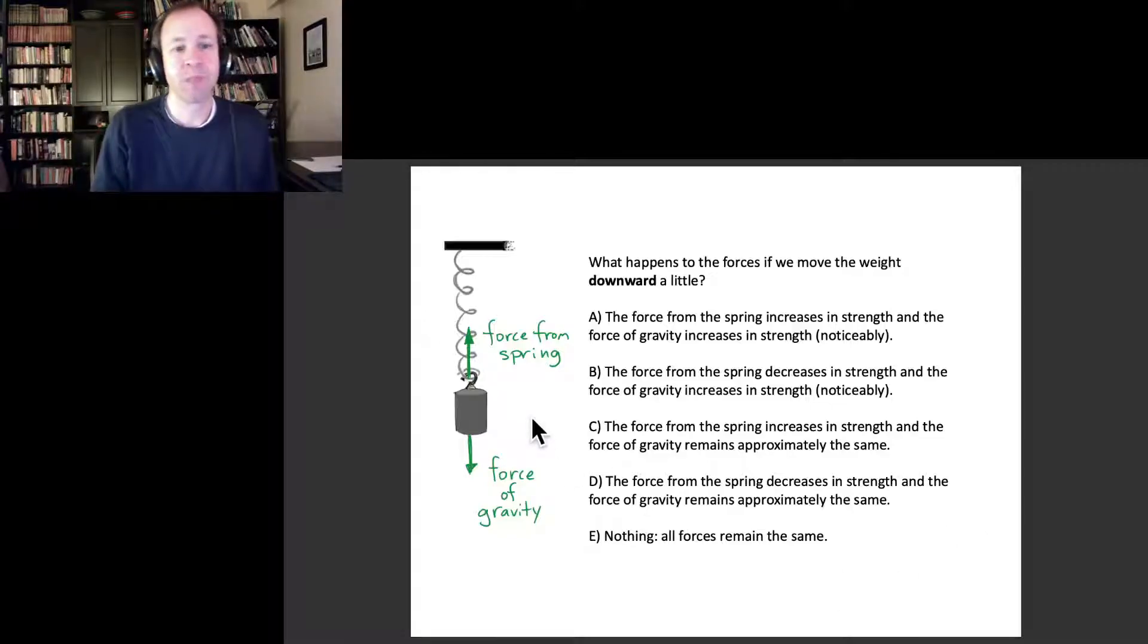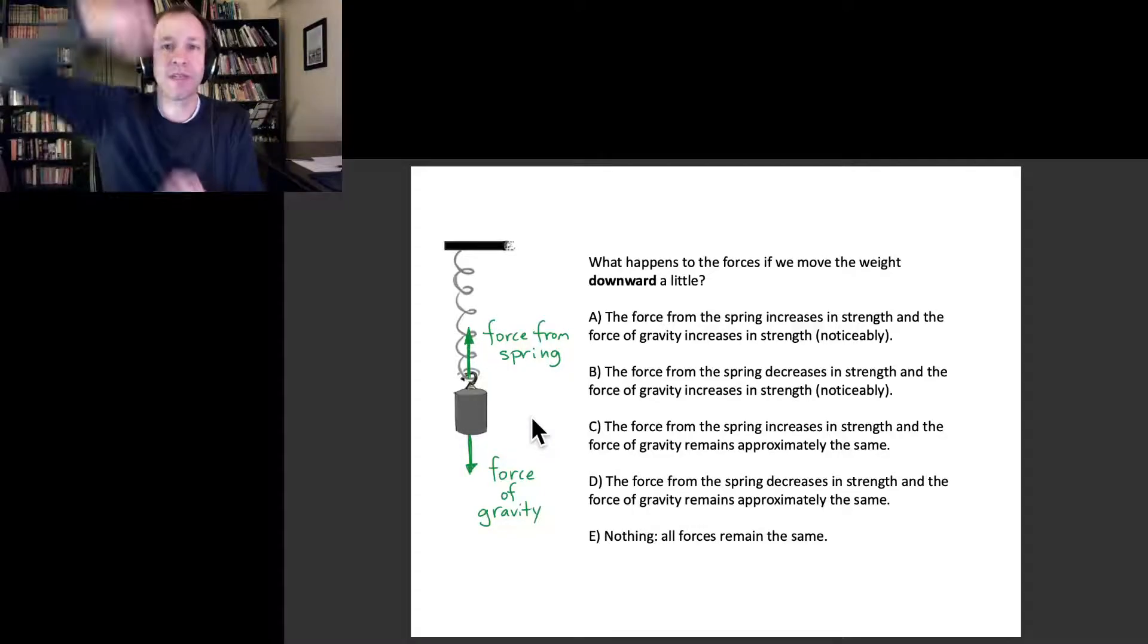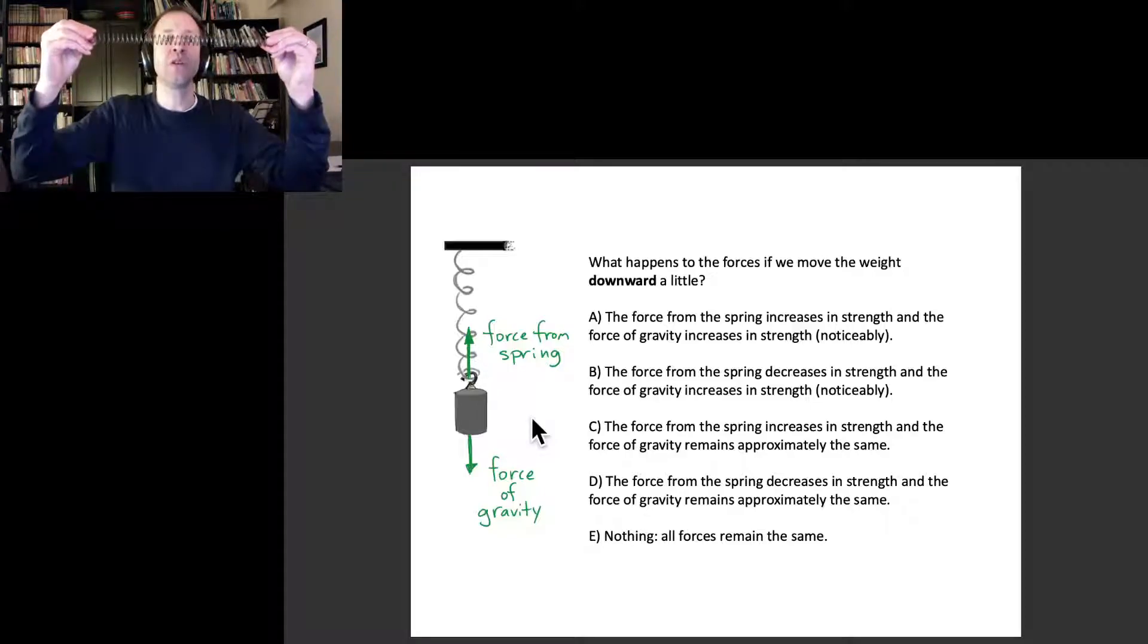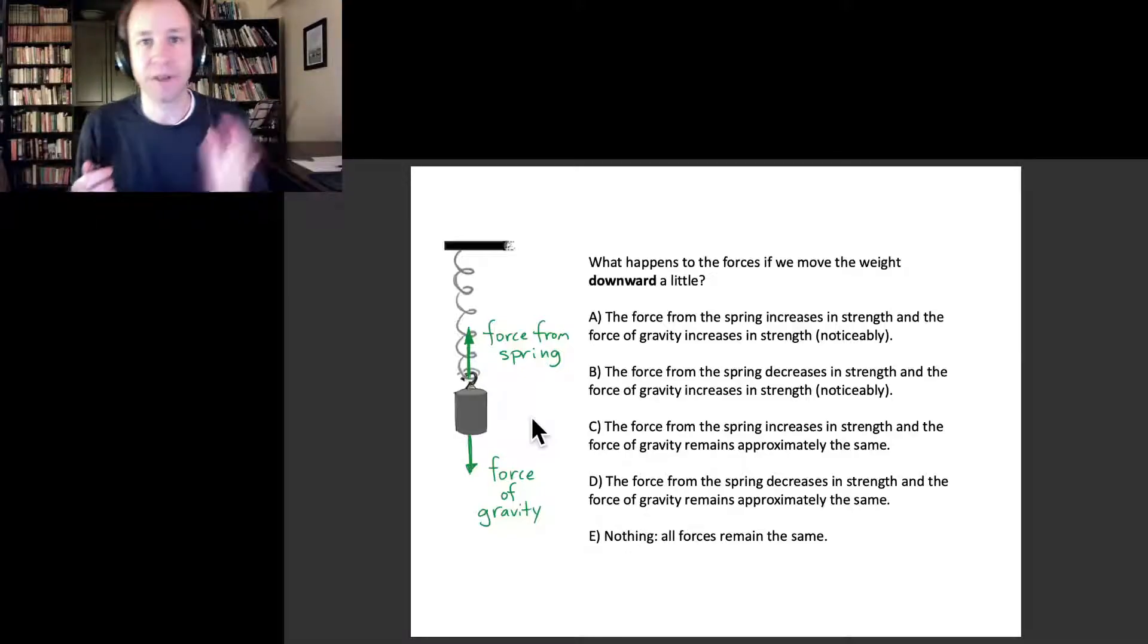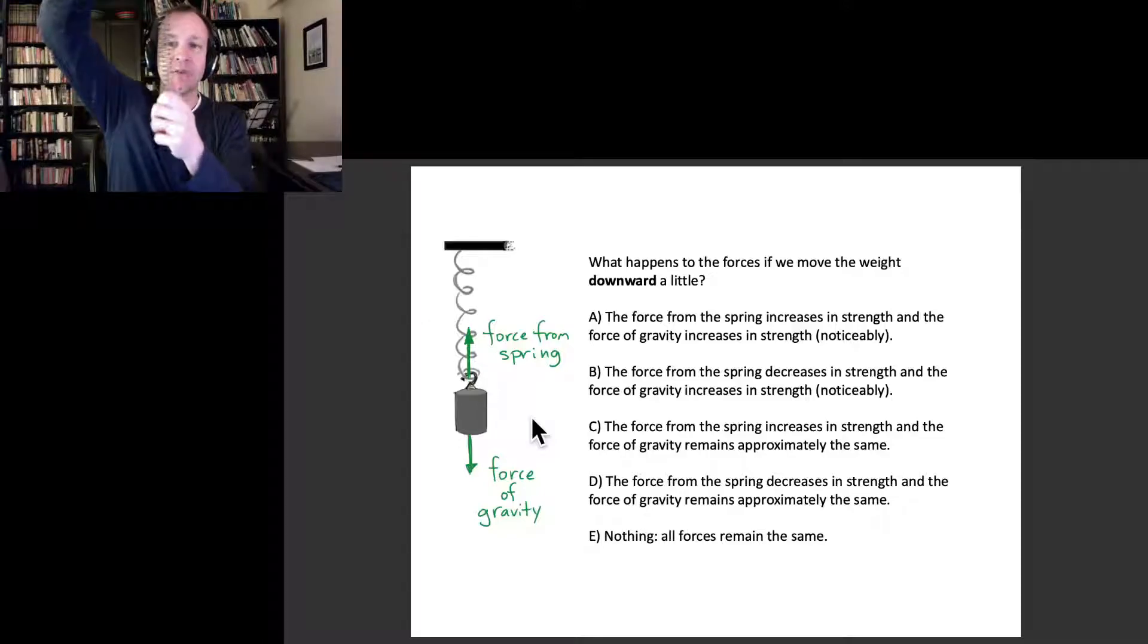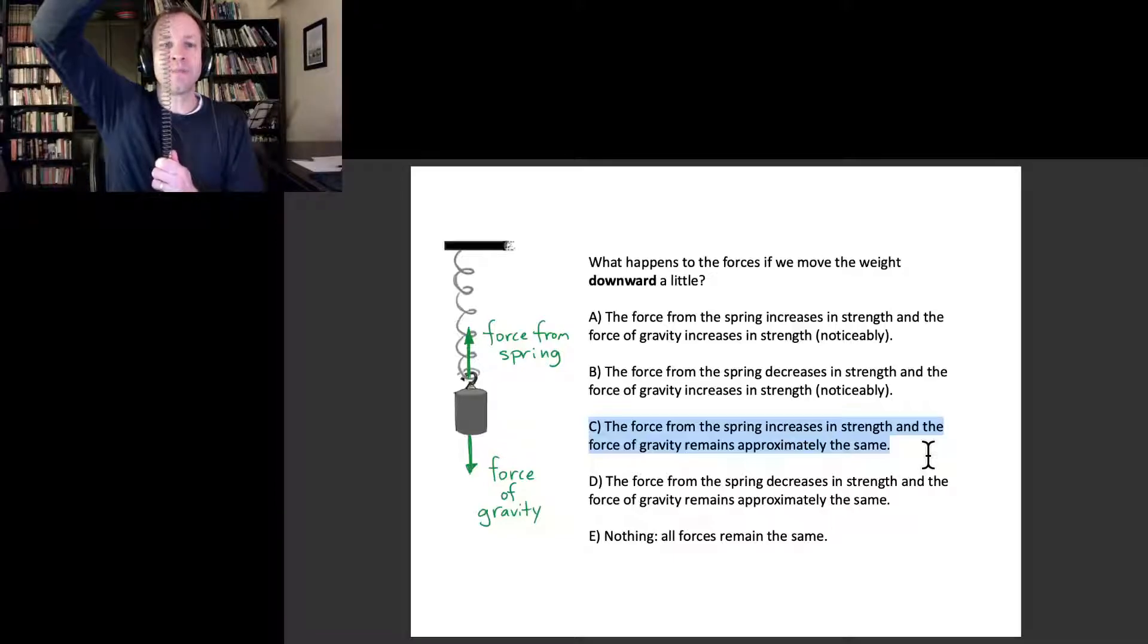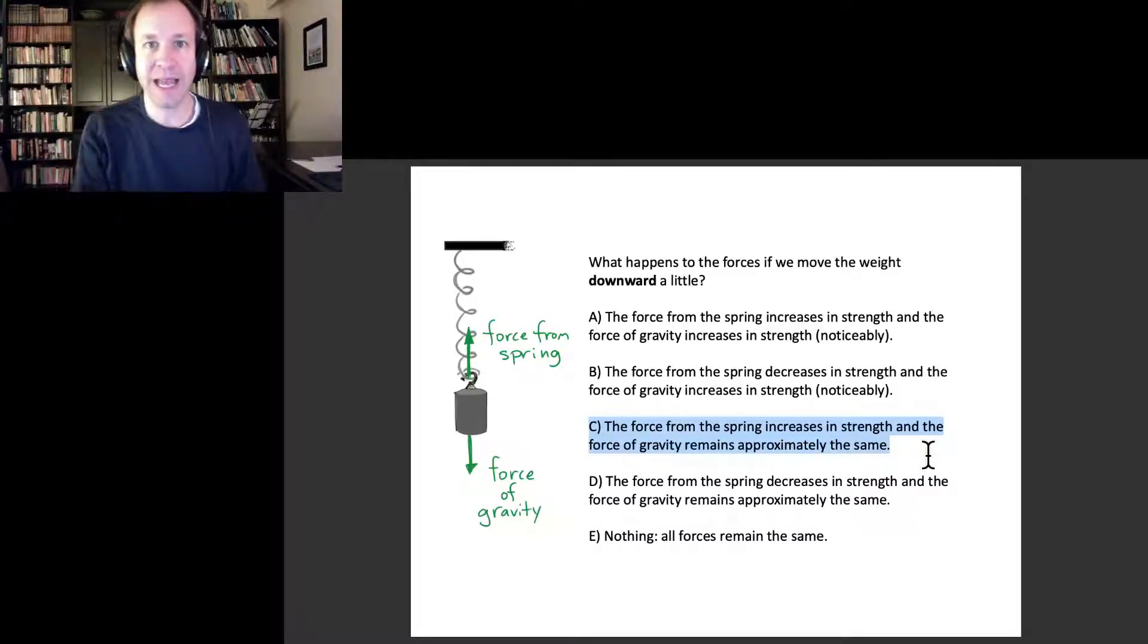What about the force from the spring? If I move that object downward a little bit, then the spring is stretched a little bit more than it was. With a spring, the more you stretch it out—here's my spring—the more force it pulls back with. We're going to talk about that in quantitative detail later, but intuitively you can understand that's true. If I don't stretch it at all, it doesn't pull back with any force. So if I move the weight down, I get an increased force from the spring. The force of the spring increases while gravity remains approximately the same, meaning overall there's now a net upward force. When you take into account the spring and gravity, they don't cancel anymore.